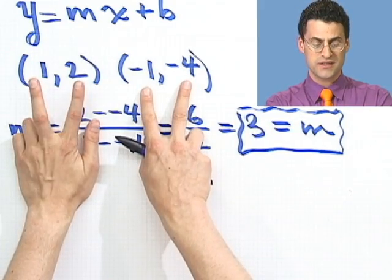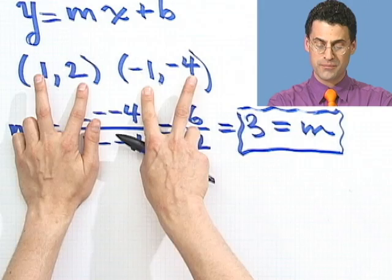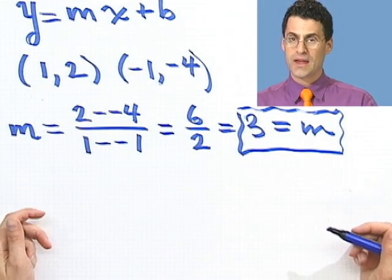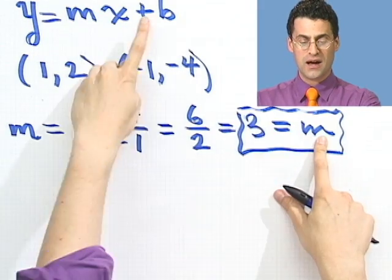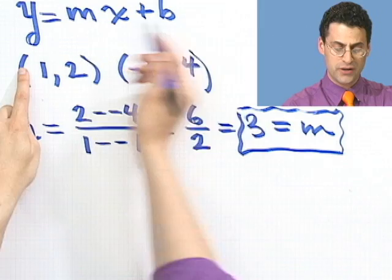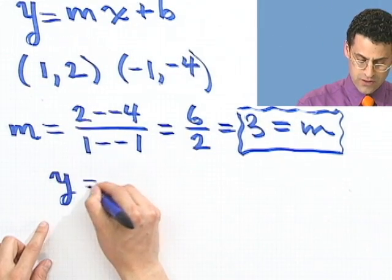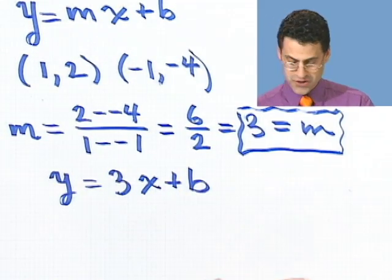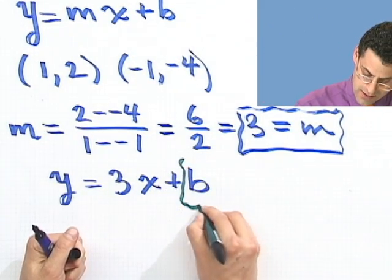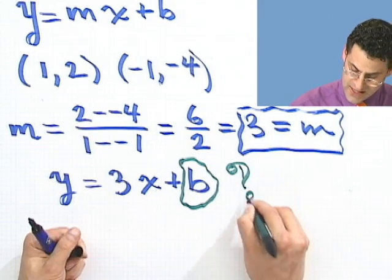But now I want to find the y-intercept. You'll notice neither of these points are an intercept. This is (1,2) and this is (-1,-4), so it looks like I'm in trouble. However, if you think about it, two points should determine a line uniquely. So if I know two points, I should be able to find the equation of the line. I already found the slope. I'm missing this value here. The way to proceed is to put in what you have: y equals 3x plus b. The question is, what's b?